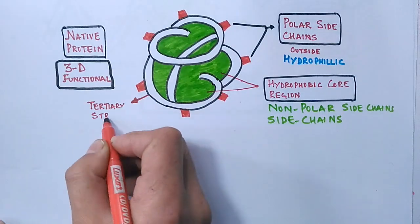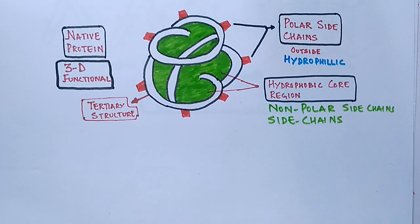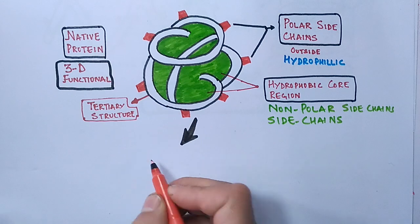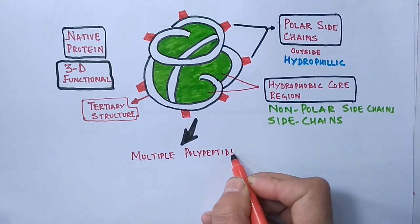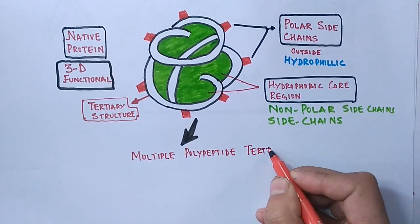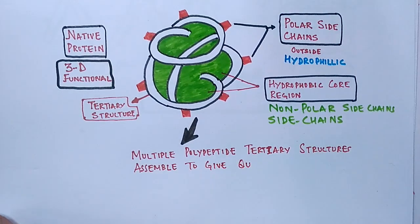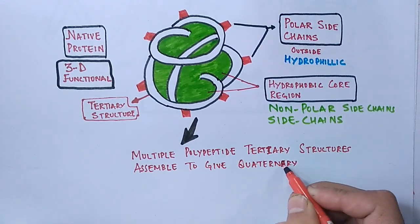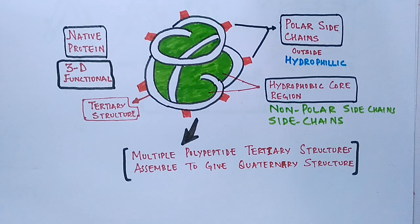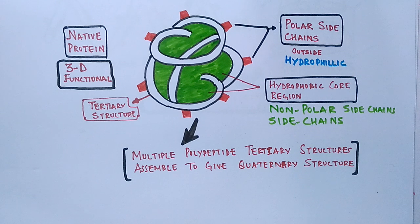Sometimes the tertiary structure transforms into a quaternary structure, which involves the assembly or co-assembly of already-folded subunits — that is, multiple polypeptide chains interacting with each other to form a fully functional quaternary protein.